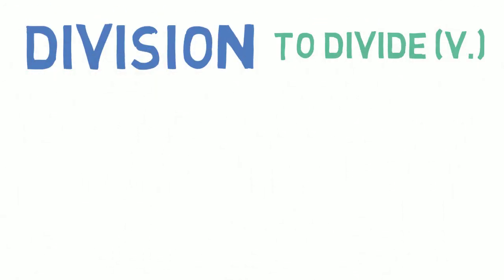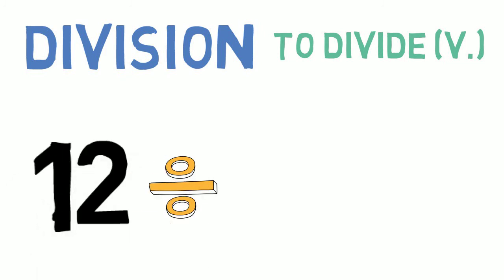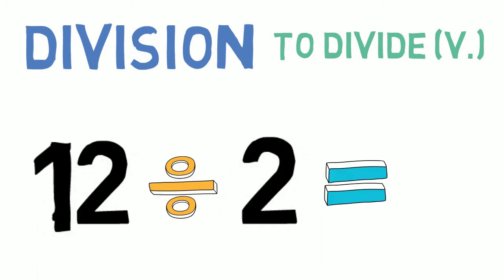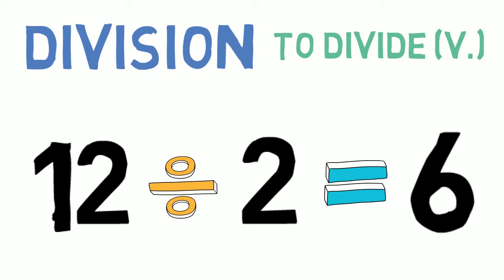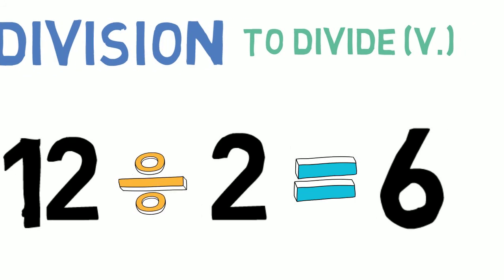Division is when you divide one number by another number. For example, 12 divided by 2 equals 6. Or, if I divide 12 by 2, I get 6.